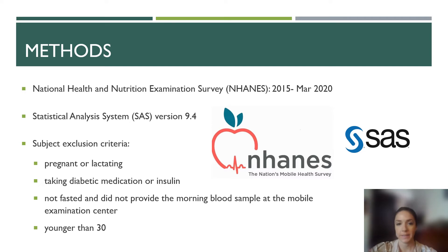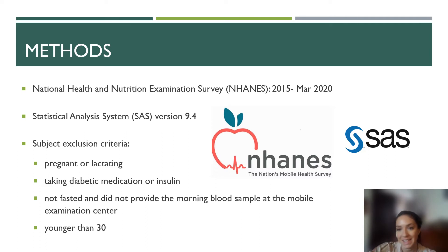I downloaded and analyzed data from the 2015 to March 2020 NHANES collection. NHANES stands for the National Health and Nutrition Examination Survey held here in the United States. All participants provided informed consent and all identifying information was removed prior to the survey datasets being made publicly available online. I used the Statistical Analysis System known as SAS to perform statistical analysis, and I excluded subjects who were pregnant or lactating, taking diabetic medication or insulin, not fasted or who did not provide a morning blood sample, and those younger than 30. After applying the exclusion criteria, the number of subjects narrowed down to 4,100.